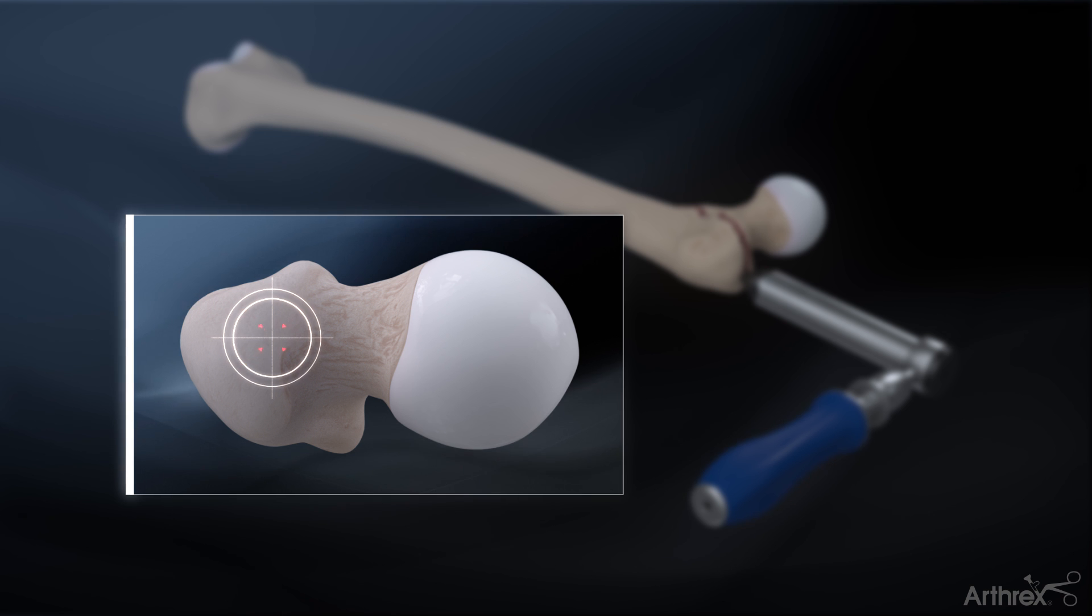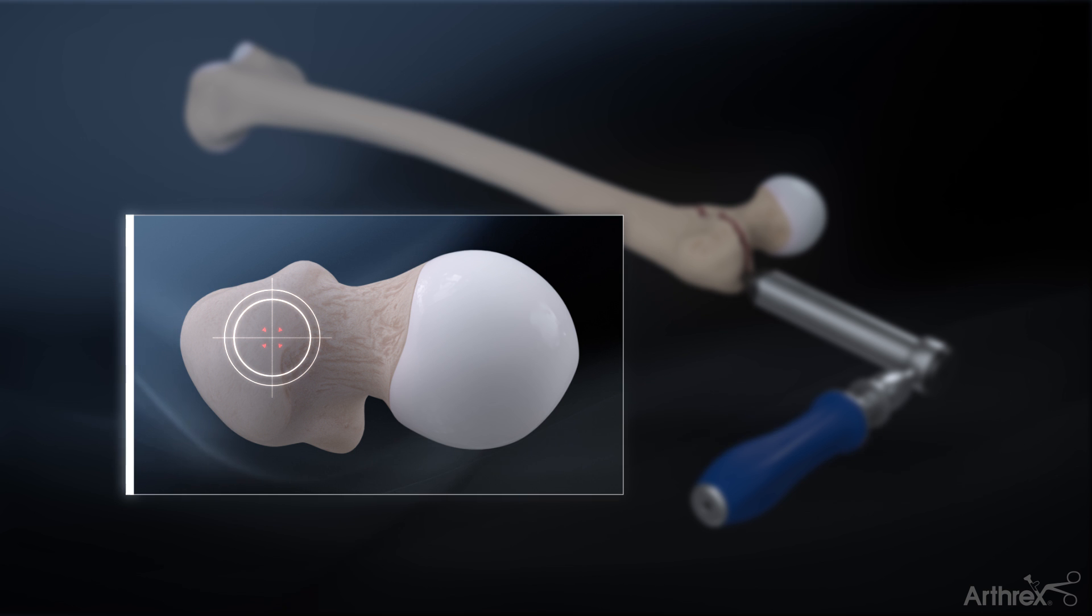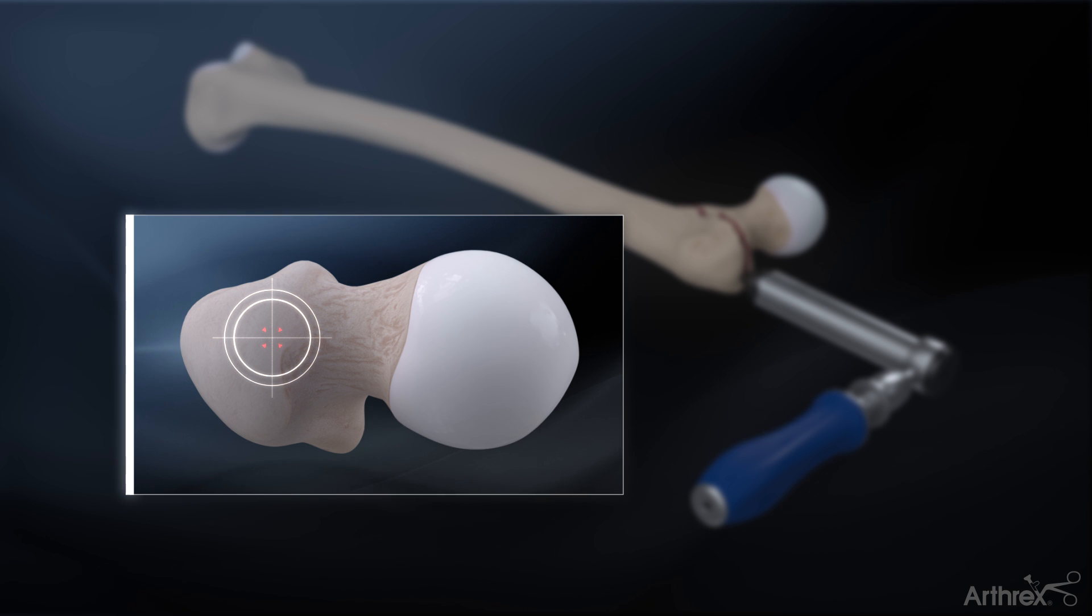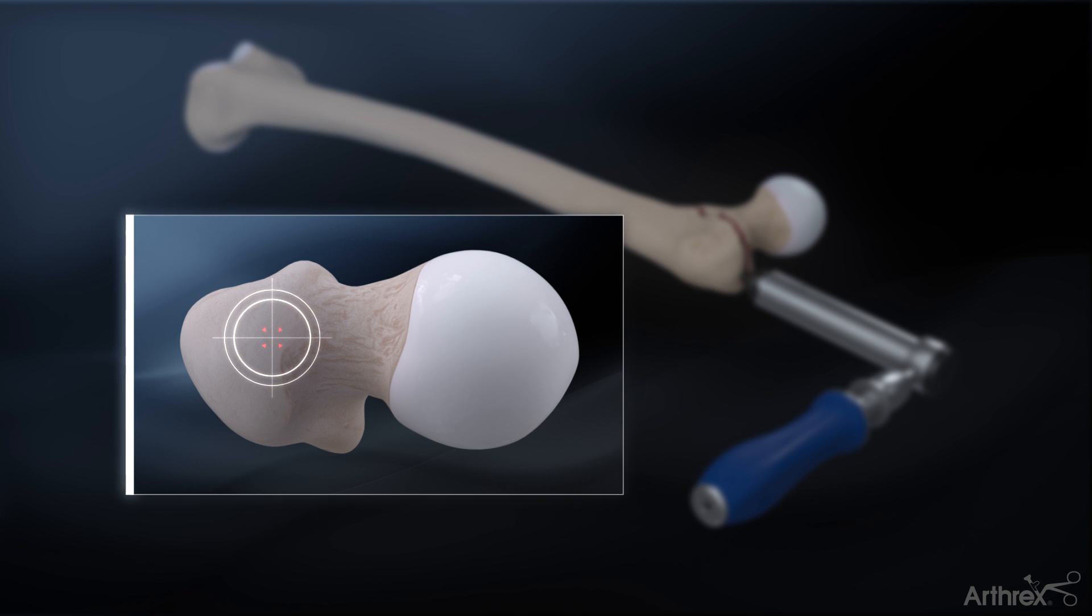The entry point for the nail is typically at the tip of the greater trochanter on the AP X-ray and at the junction of the anterior and middle third of the greater trochanter on the lateral X-ray. This point may vary slightly depending on patient anatomy and fracture pattern.